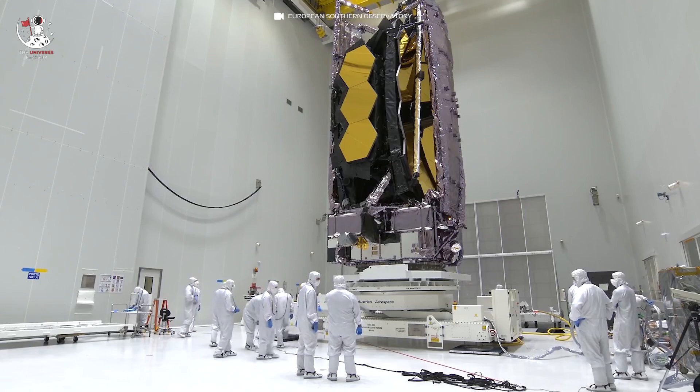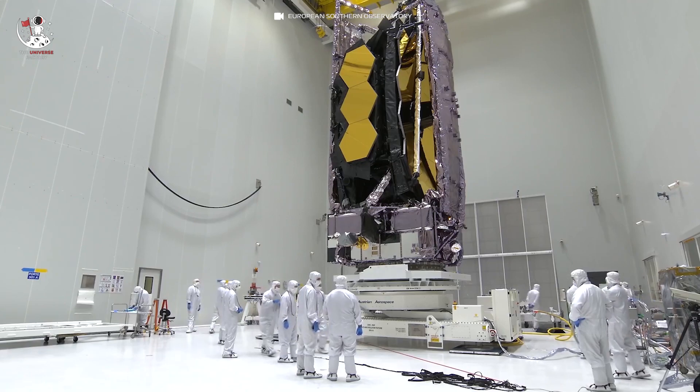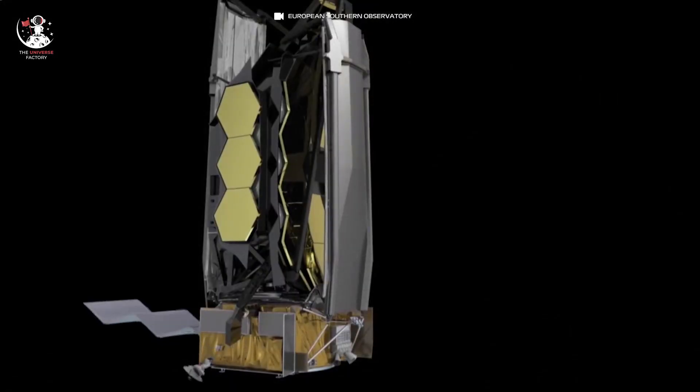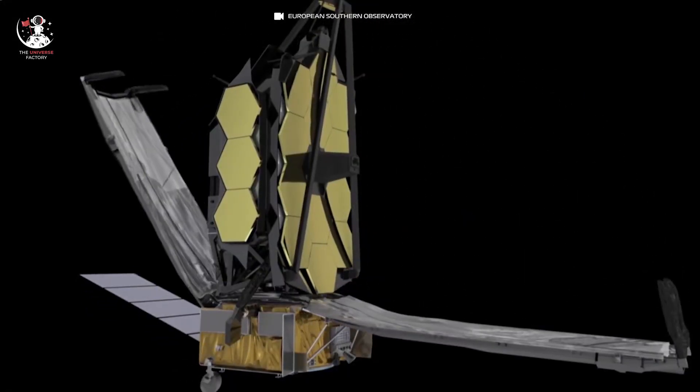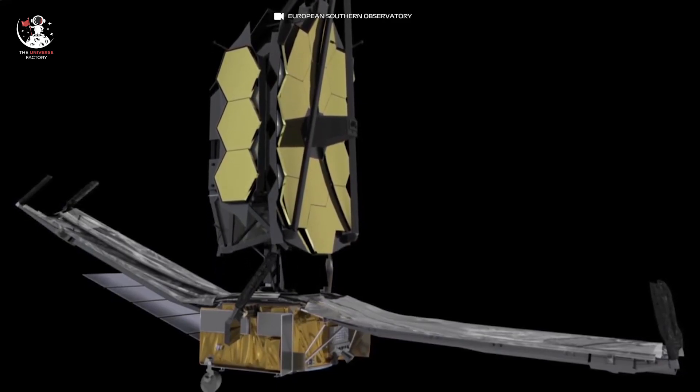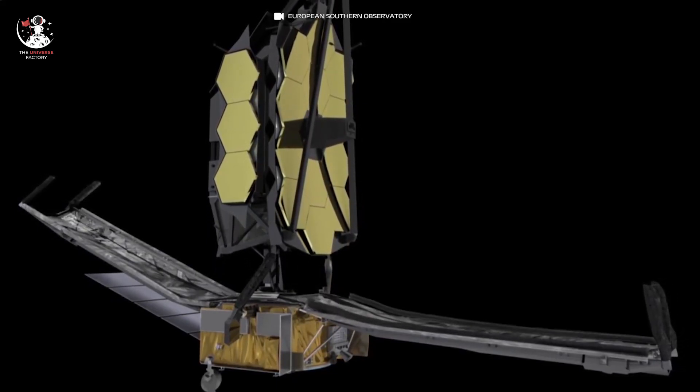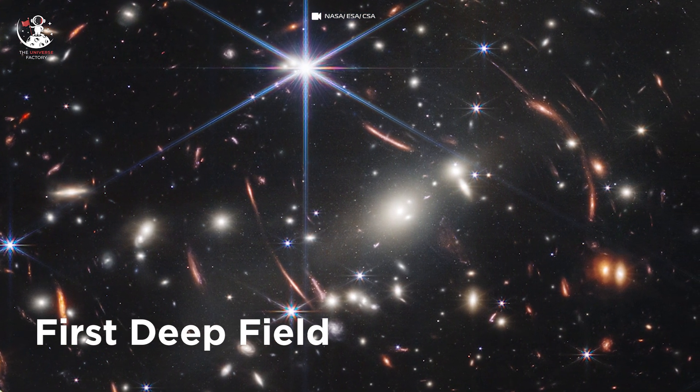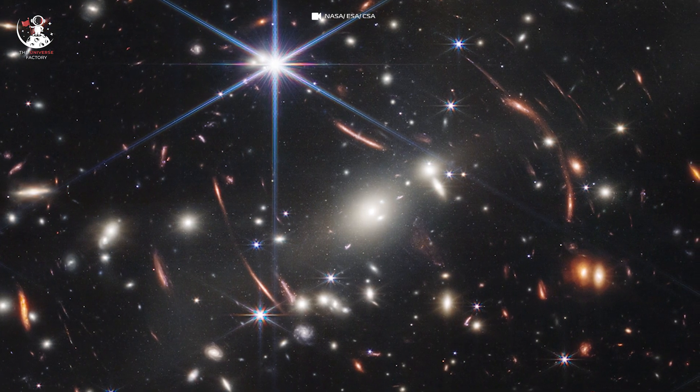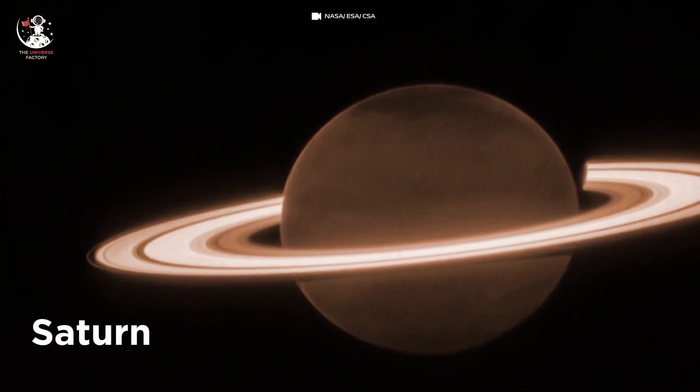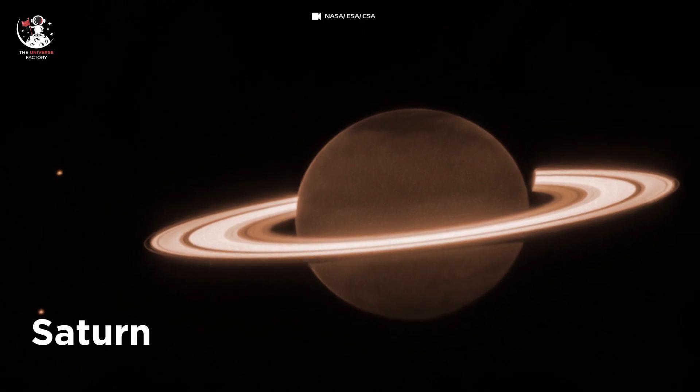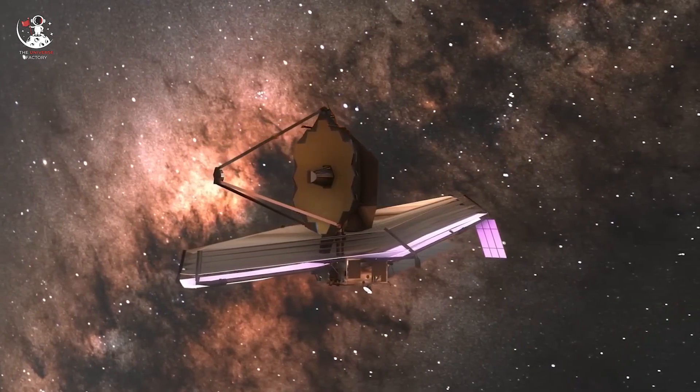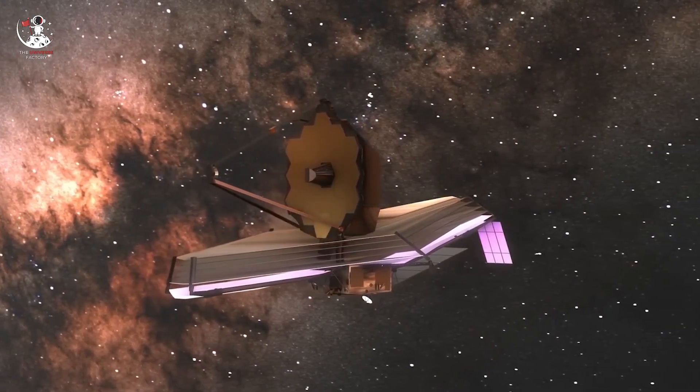NASA's James Webb Space Telescope has never failed to amaze us since its launch back in Christmas 2021. It began its science operation last summer and since then it has released many breathtaking images. Right from the first deep field that shows thousands of galaxies, some as old as 13 billion years, to the latest one from our own astro-backyard featuring Saturn, its ring system and moons, JWST's spectacular work has helped us understand many secrets of the Universe.